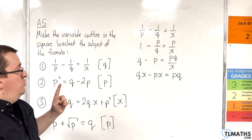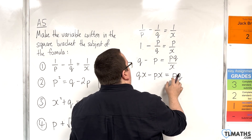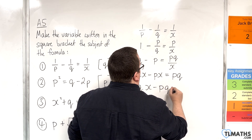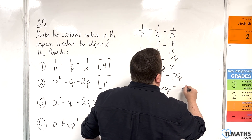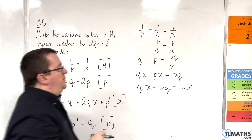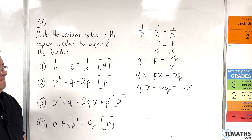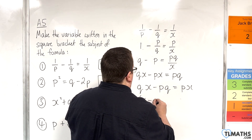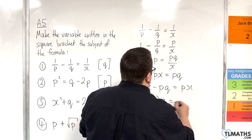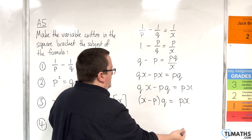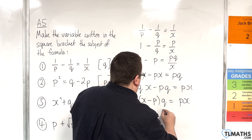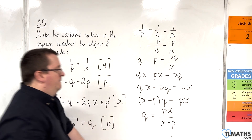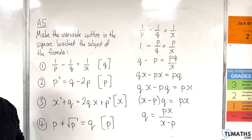Now we want to isolate the Q. So I'm going to subtract PQ from both sides and add PX to both sides, so I get both terms on the left-hand side with Q as a factor. I can factor out the Q. So X take away P, lots of Q, is PX. And then divide both sides by the bracket. So Q is PX over X take away P. And that's our first one.